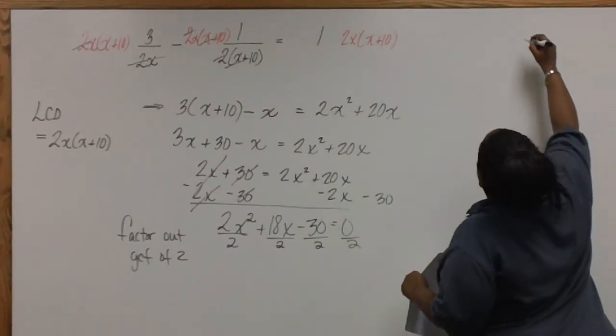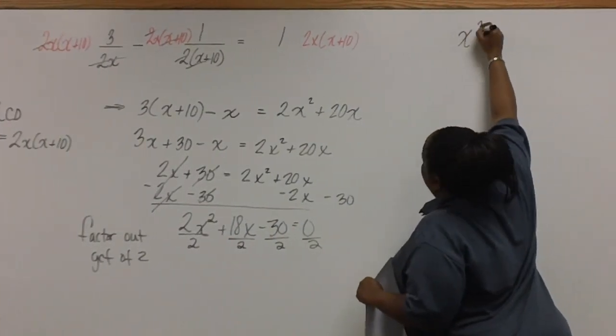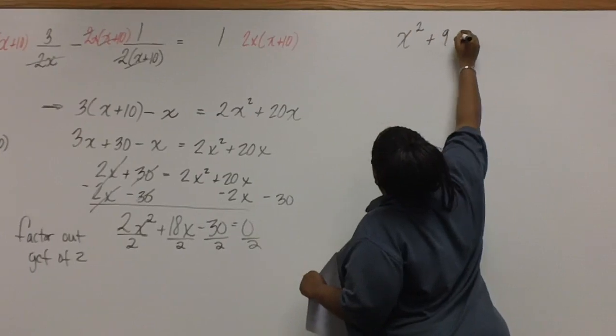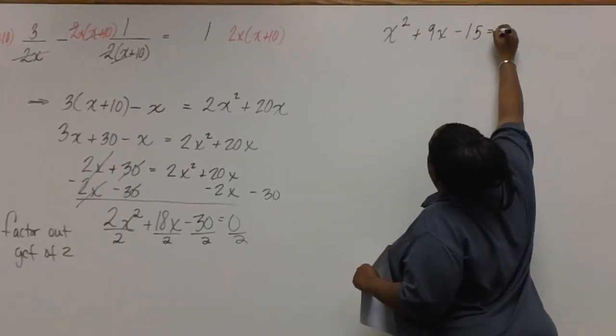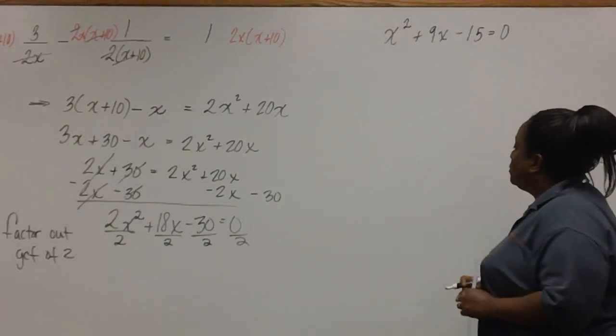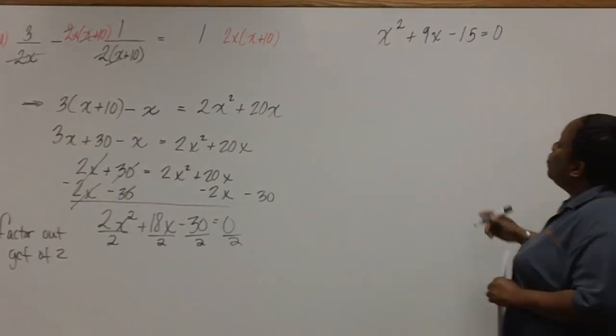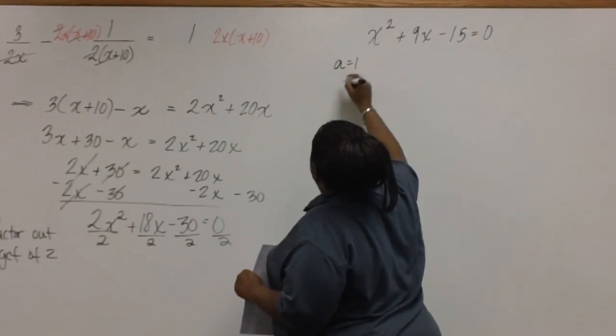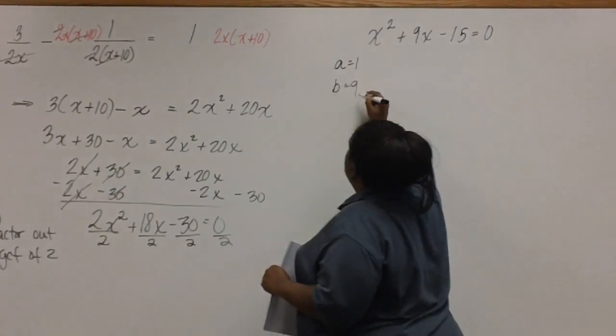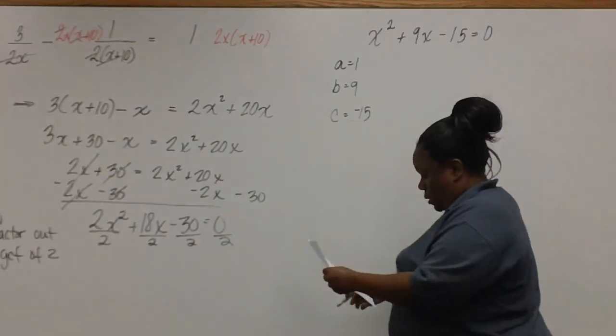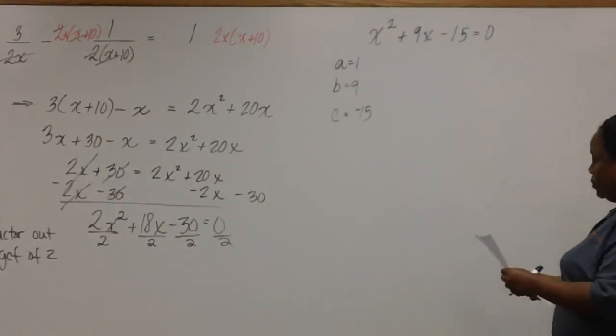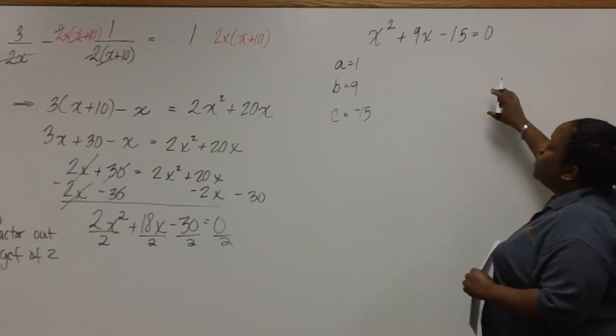So we now have x squared plus 9x minus 15 equals zero, where a equals 1, b equals 9, and c equals negative 15. Now we're ready for our formula.